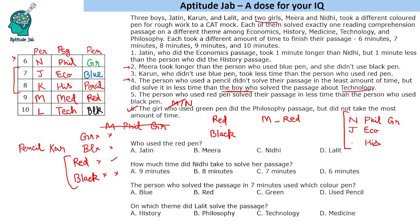Now let us answer the questions. Who used the red pen? — Mira. How much time did Nidhi take? — Nidhi took six minutes. The person who solved in seven minutes used which color pen? — Blue pen. On which theme did Lalit solve the passage? — Technology. That is the solution to the set.